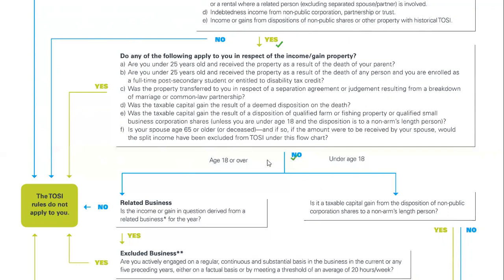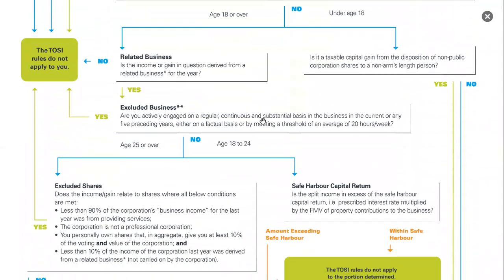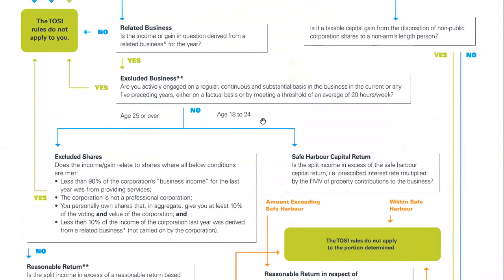We're on the no side, age 18 or over. And now the question is: does the income come from a related business? It does — that's the whole idea here, that it's a business that this person's spouse owns. So our 40% shareholder, our minority position, owns 40% of a business that their spouse owns 60% of. Absolutely, that is a related business. Now we continue working through the chart. We know that related business applies and now the question is: does excluded business apply?